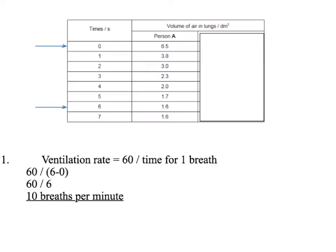Instead of a graph this time, we'll try using a table. We've got enough information here to work out the pulmonary ventilation. First of all, we need to work out the breathing rate — the ventilation rate — by 60 divided by the time taken for one breath in seconds. We need to work out the time taken for one breath, and we can see the time is six seconds, the difference between zero and six.